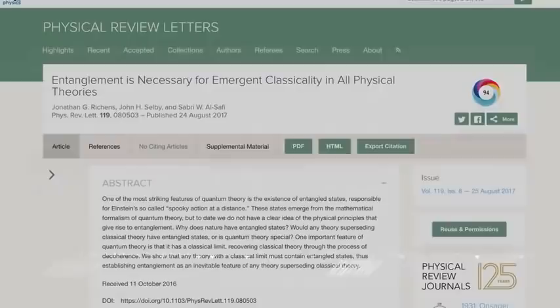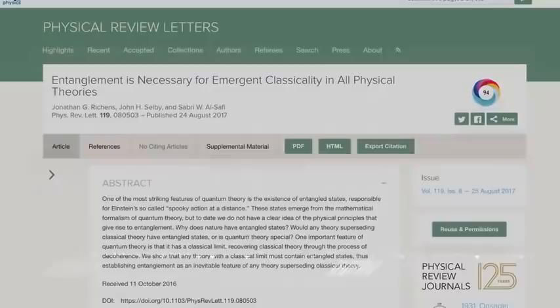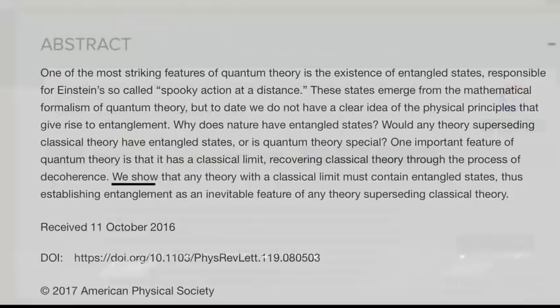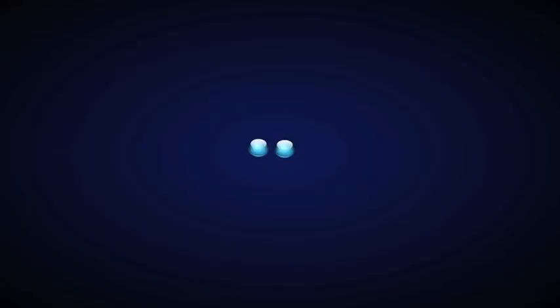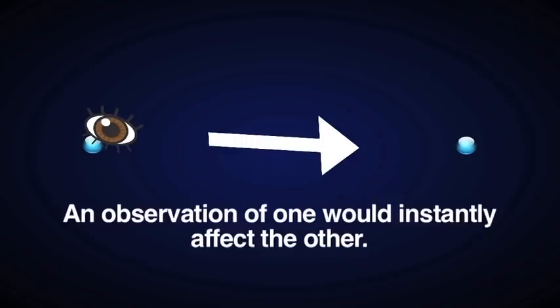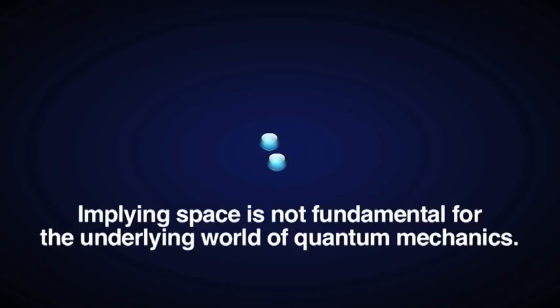We show that any theory with a classical limit must contain entangled states, thus establishing entanglement as an inevitable feature of any theory superseding classical theory. In other words, any theory which purports to describe reality must include quantum entanglement as an underlying fundamental feature of reality. If you entangle two particles and separate them by a great distance, a change to one will instantly affect the other, regardless of the space between them. So the information between them doesn't seem to be affected by space, implying space is not fundamental for the underlying world of quantum mechanics, but an emergent phenomena of the classical world that only exists after measurement.